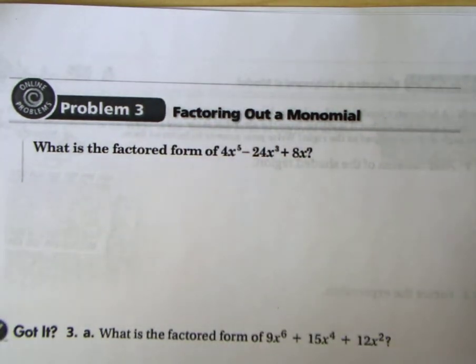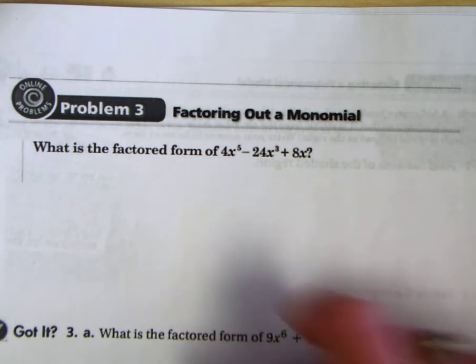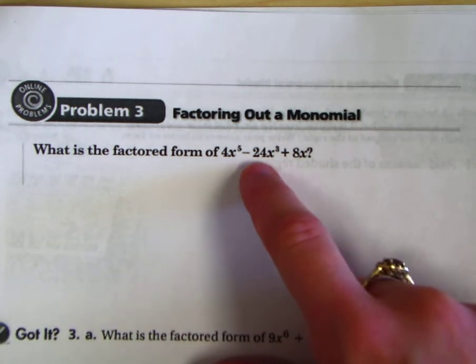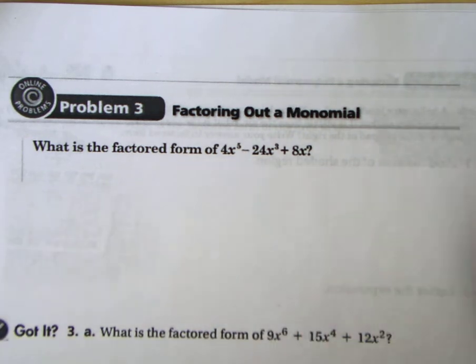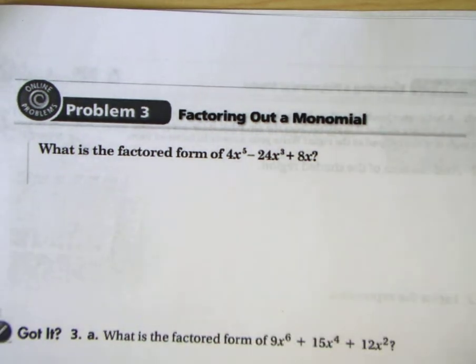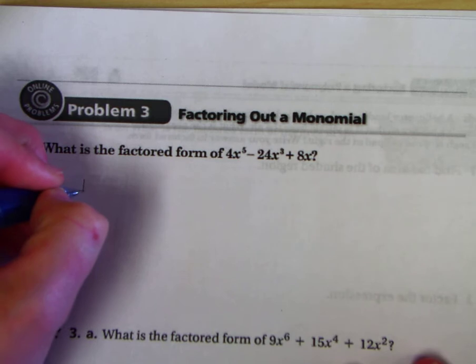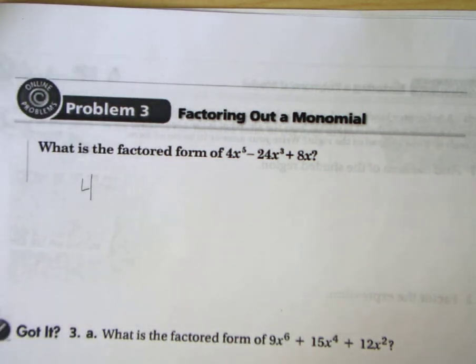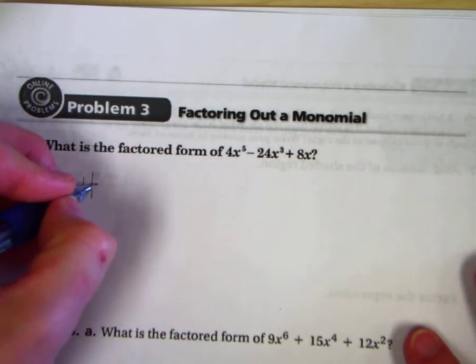It's really just finding the greatest common factor and pulling it out. Let's look at what we have: 4x^5 - 24x^3 + 8x. I notice that 4 goes into all of these coefficients. So I'm going to pull out a 4, and I'm going to pull out the variable x.